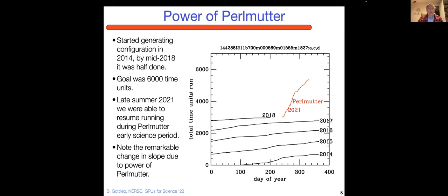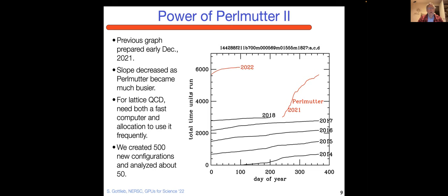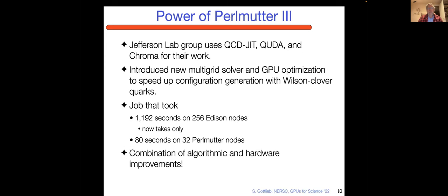Then there was a gap for about three years until Perlmutter came along. You can see the red plot for Perlmutter. Wow, what a change in the slope. This is the power of Perlmutter for us. But that graph was prepared in December 2021. Turns out Perlmutter became much busier when it wasn't so much early science and everyone was allowed on Perlmutter. So you can see that our rate of progress slowed down considerably. You both need a fast computer to do lattice QCD and a sufficient allocation to use it. We completed our goal of creating 500 new configurations in the first quarter of the year.